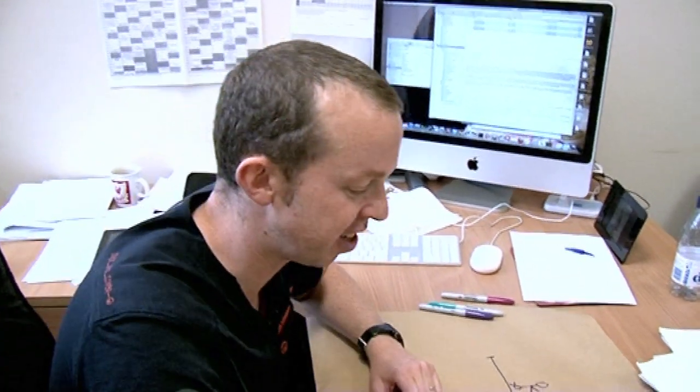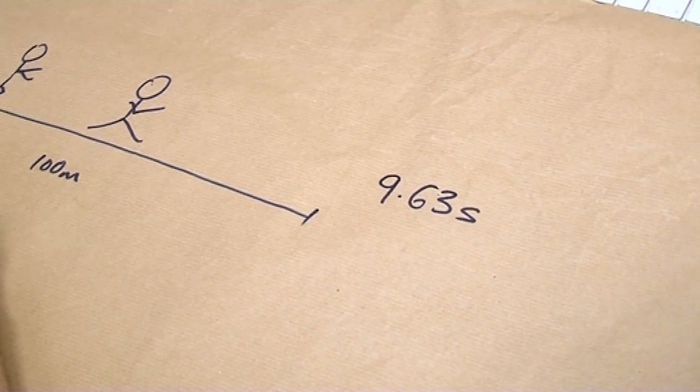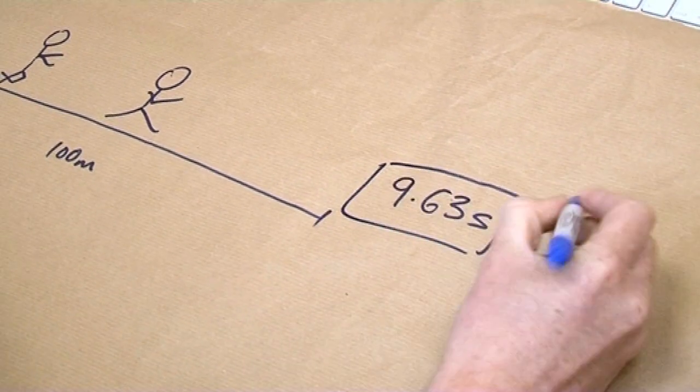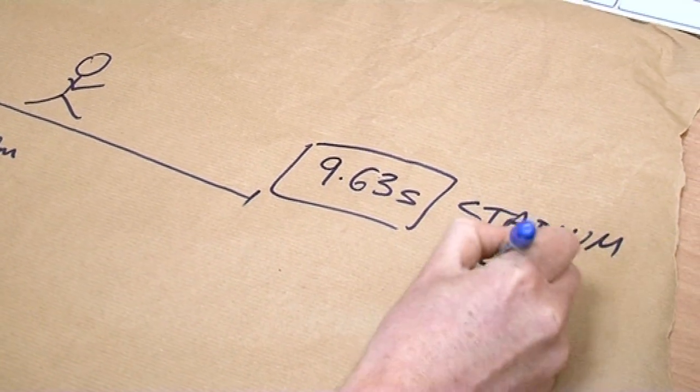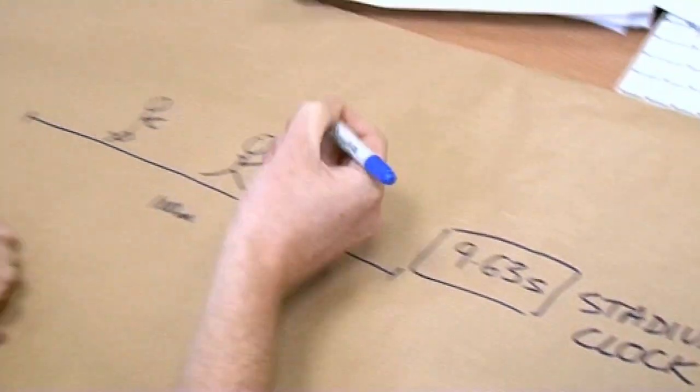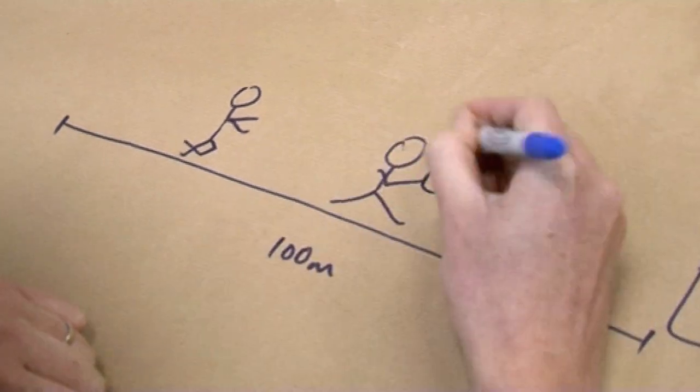Okay, so Usain Bolt went past the finishing line in 9.63 seconds according to the stadium clock. Let's make that clear, the stadium clock. Now, what I want you to imagine is that Usain Bolt has got a little watch on. So, this is Usain Bolt's clock.